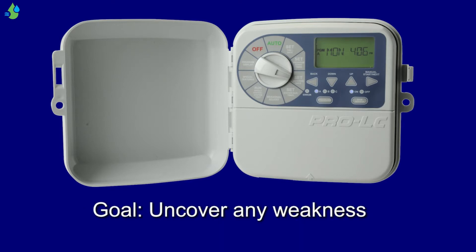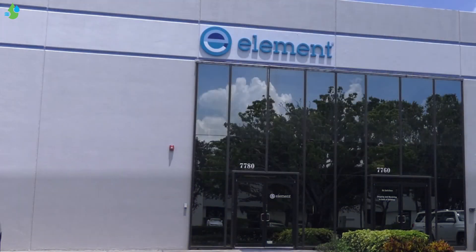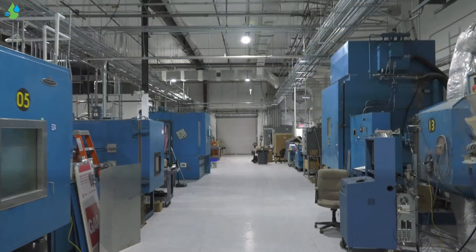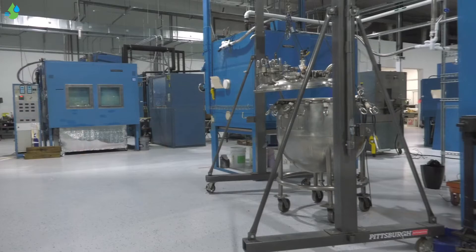The goal of the HALT is to uncover any weakness in a test-until-failure procedure, so changes can be made during product development. To test the K-Rain Pro LC Irrigation Controller, we contracted a facility with the most sophisticated testing equipment available.